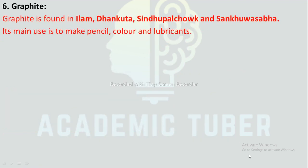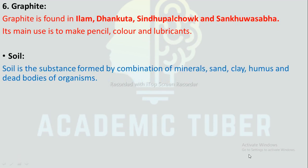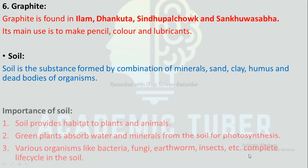Graphite: Graphite is found in Ilam, Dhankuta, Sindhupalchok, and Sankhuwasabha. Its main use is to make pencils, colours, and lubricants. Soil: Soil is the substance formed by the combination of minerals, sand, clay, humus, and dead bodies of organisms.